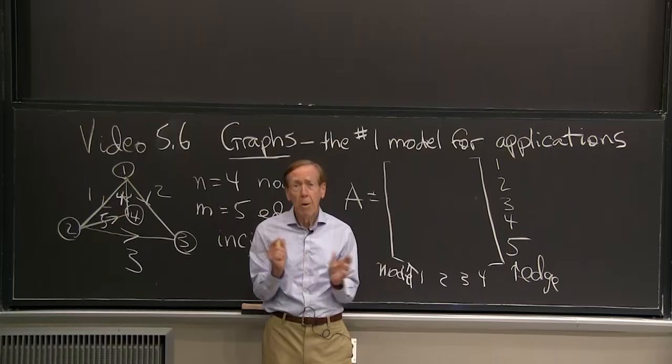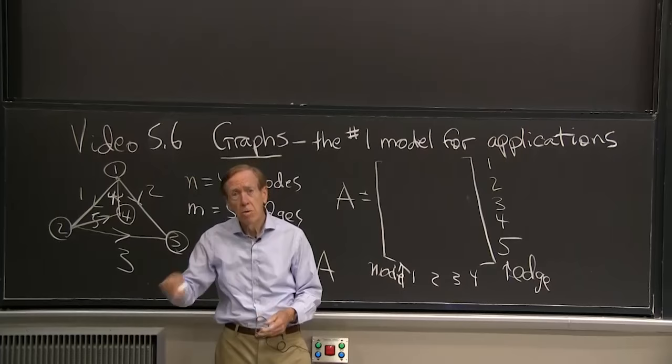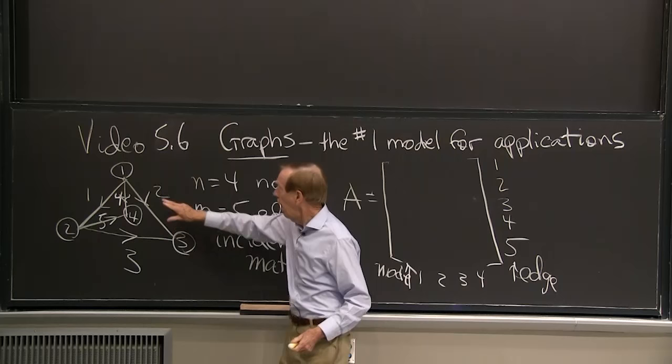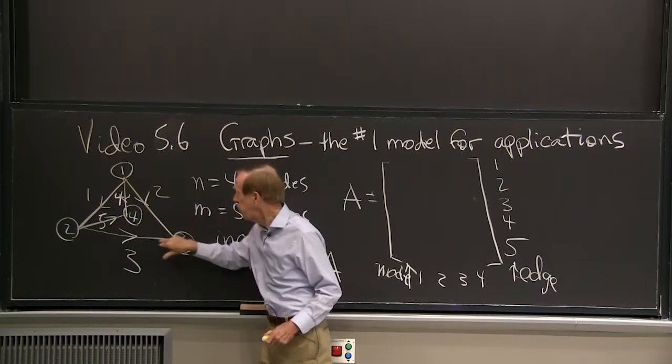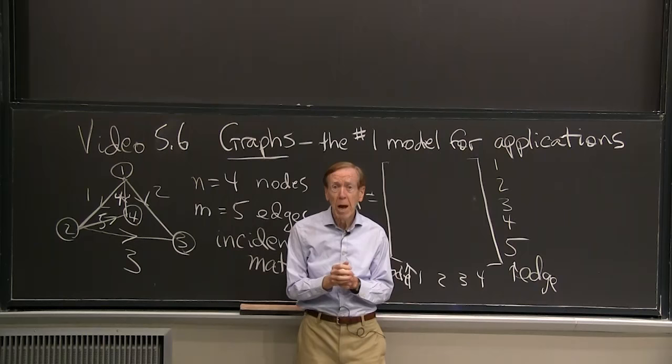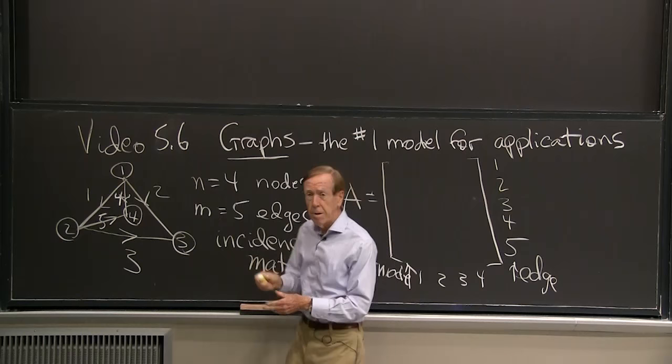Now, what do I mean by the word graph? I don't mean a graph of sine x or cosine x. The word graph is used in another way completely for some edges and some nodes. So I have some nodes in this case, 1, 2, 3, 4 nodes. That's my number n.